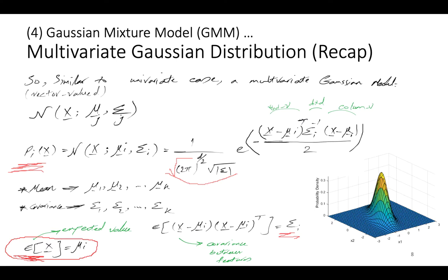The superiority of GMMs over other density estimation techniques like Parzen window or histogram is that GMMs are parametric — they are defined by parameters like mean, variance, and covariance — whereas histograms and Parzen windows are non-parametric. GMMs are powerful parametric density estimators, and the normalizing constant ensures the integral of p over the distribution equals 1.